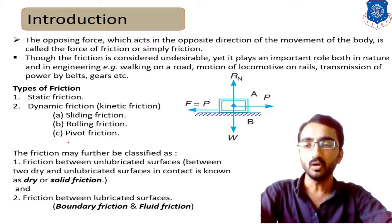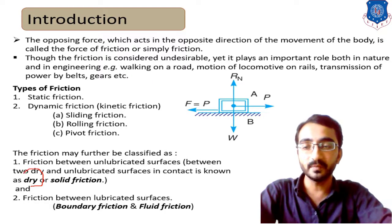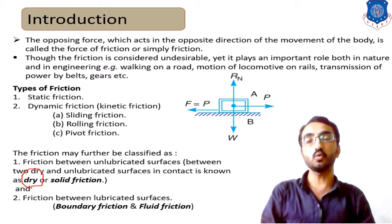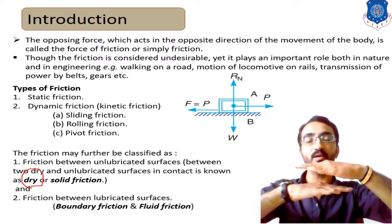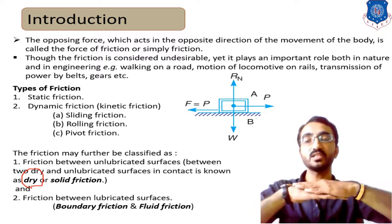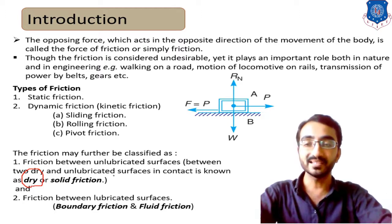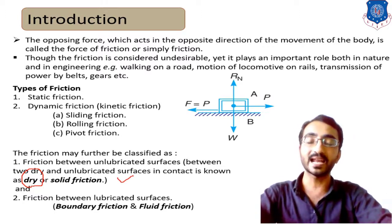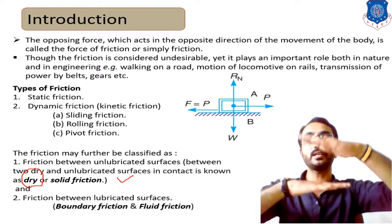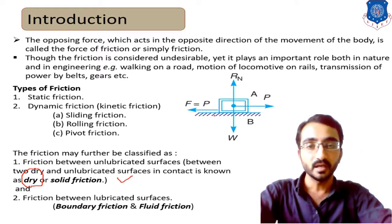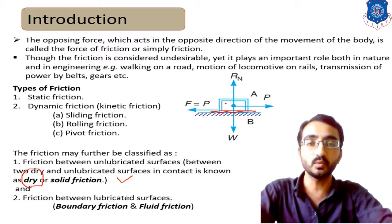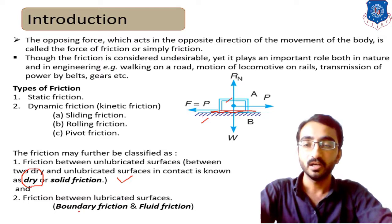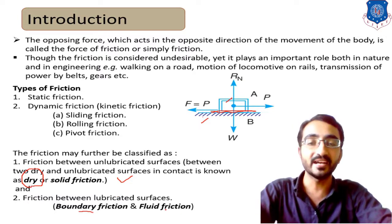Friction is also classified into dry friction and fluid friction. Dry friction occurs when two bodies in contact have no lubrication or liquid between them. The value of dry friction is always high compared to fluid friction. When a layer of water or lubrication exists between the body and surface, the friction generated is known as fluid friction, which is further classified into boundary friction and fluid friction.